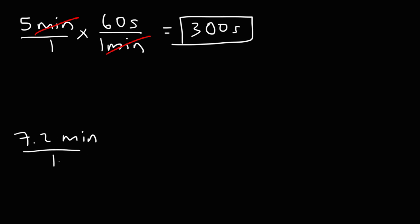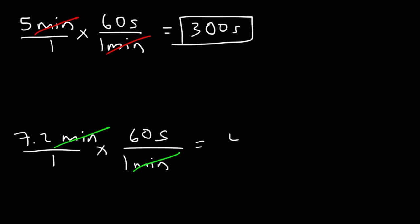Now for 7.2 minutes, we're going to do the same thing and multiply by 60. So this is 7.2 times 60, and using a calculator, that's going to be equal to 432 seconds.